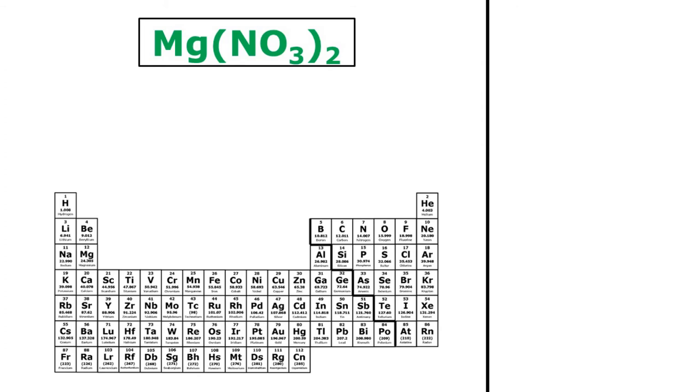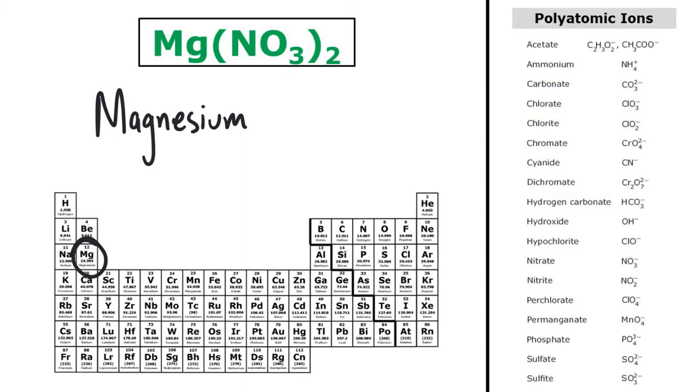So here I have Mg(NO3)2. So Mg is my metal, that's magnesium. So I just write the name of my metal without changing it. Once again, I can see that I clearly have a polyatomic ion here. So NO3 is nitrate. So I just use the name of the polyatomic ion that I see. So the name of this ionic compound is magnesium nitrate.